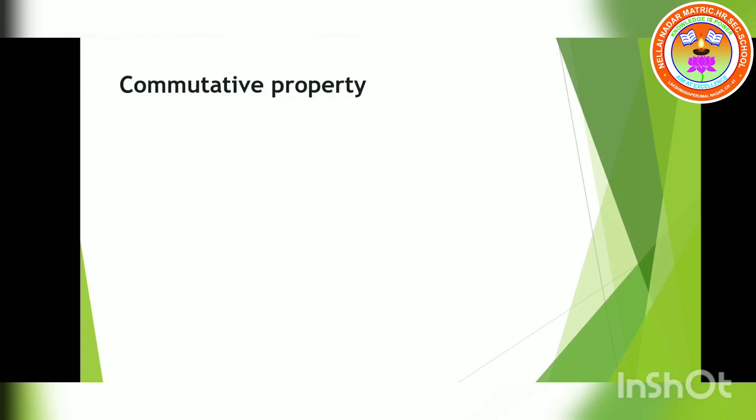Next, we move on to commutative property. What is commutative property? We are going to take two integers. If a into b is equal to b into a, then we say that the two integers satisfy the commutative property. For any integers a and b, we have a into b is equal to b into a.